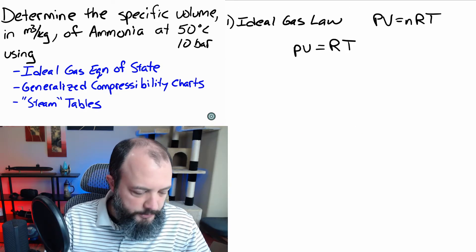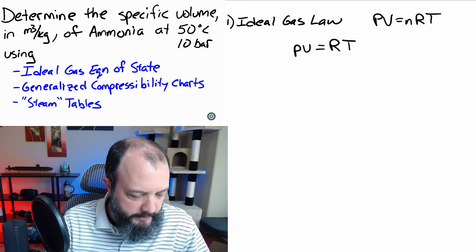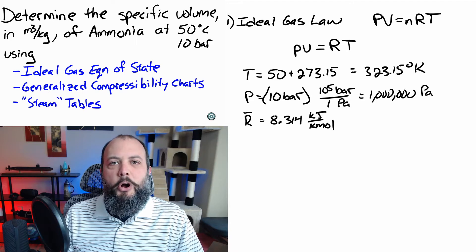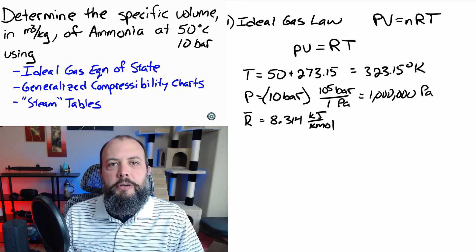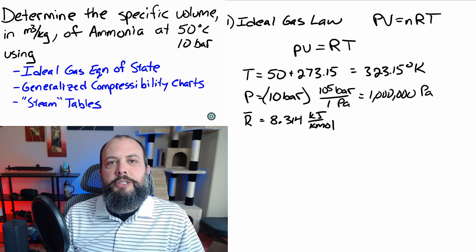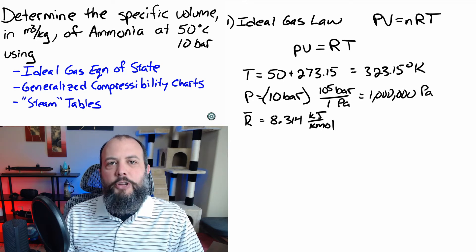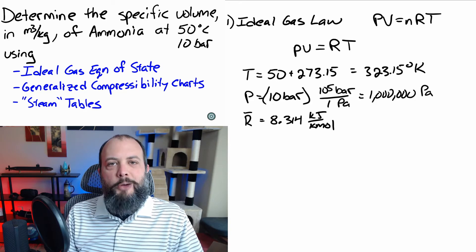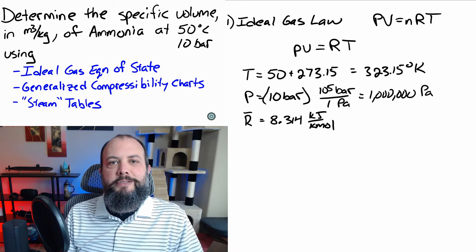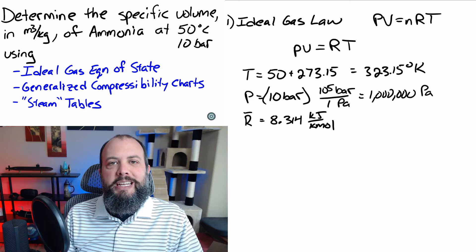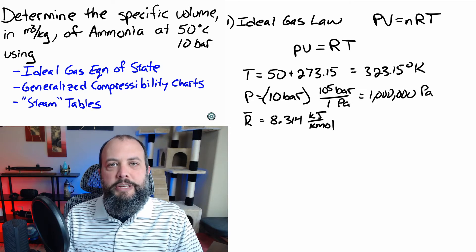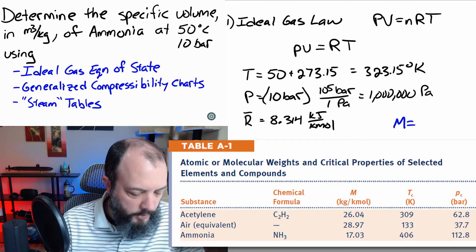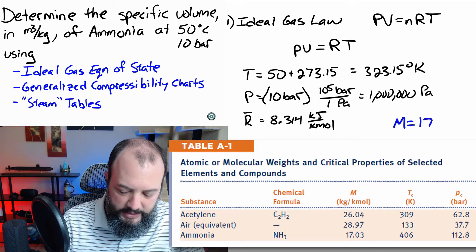And before plugging in numbers, some unit conversions are going to be required. The first two conversions were to convert Celsius into Kelvin for temperature, and then bar into Pascal for pressure. We also look at the equation PV equals RT just has R and not R bar. The inside cover of the textbook has a value for R bar, which has different units that we need. So, we'll need to divide by the molar mass in order to get the R value that we'd use in the equation.